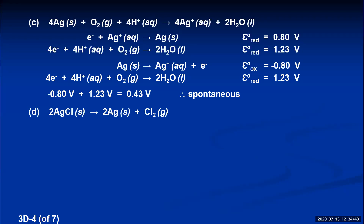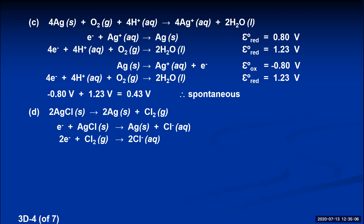In part D, we have silver chloride as a solid, which means you had to find a half reaction that actually contained AgCl solid. If you scour the table, there was only one: silver chloride yields silver plus chloride, with a reduction potential of 0.22. What's missing is diatomic chlorine, so you had to find a reaction with diatomic chlorine — chlorine plus two electrons yields two chloride ions — with a reduction potential of 1.36.